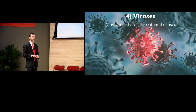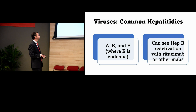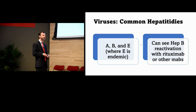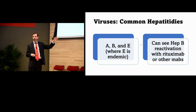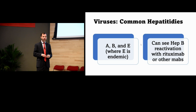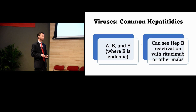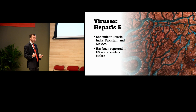Tip number four: viruses. Move quickly to exclude viral causes using straightforward testing. Hepatitis A, B, and E are known to cause acute fulminant liver failure. A classic board question — and real clinical scenario — is a patient started on rituximab or another immunosuppressant who has suppressed hepatitis B that then reactivates, causing fulminant liver failure. Think about hep B reactivation any time an immunosuppressant is recently started.